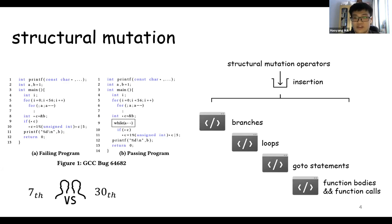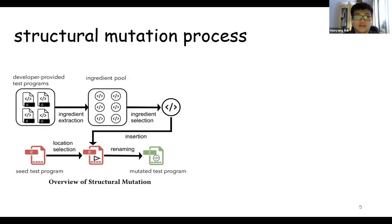Here is our structural mutation process. We should know that branches, loops, and function bodies are all difficult to build. So to make things simpler, we can extract them from developer-provided test programs. Then we build an ingredient pool and select our target ingredient from it. We insert the target ingredient into the test program after finding available locations for insertion. Then we perform the renaming process because some variables contained in the ingredients may cause bugs. Finally, we obtain our new test program.